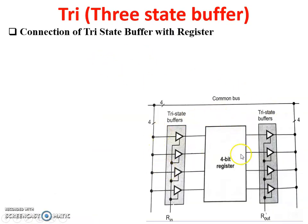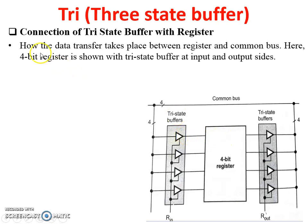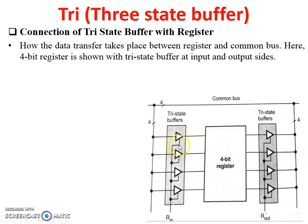The tri-state gate which provides more sinking and sourcing capacity is called a tri-state buffer. This is the connection of a tri-state buffer with a register. In the figure, this is a 4-bit register. Now let's see the detail of the figure — how the data transfer takes place between the register and the common bus. This is the common bus and this is the 4-bit register, shown with tri-state buffers at both input and output sides. The input line of the 4-bit register is connected with tri-state buffers, and data comes from the register to the common bus.